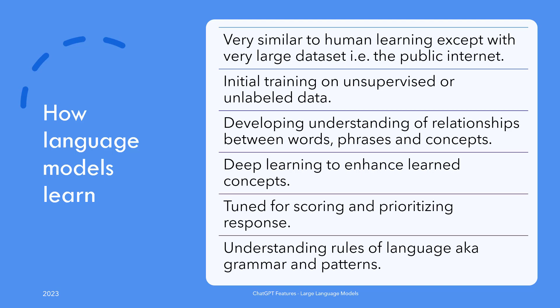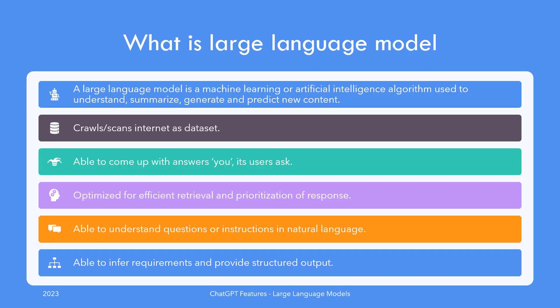Large language models are first trained on unsupervised and unlabeled data until they develop an understanding of relationships between words, phrases, and concepts. Then they are passed through various deep learning techniques to deepen the learned relationships and to score and prioritize the responses generated given an input. Languages are based on grammars — that is, rules — and therefore there are patterns in language, recognizing which is the job of the AI model. Once a machine learning model understands those patterns, it is able to predict and even generate text given its vocabulary and vast knowledge. A large language model is a machine learning or AI algorithm used to understand, summarize, generate, and predict new content.